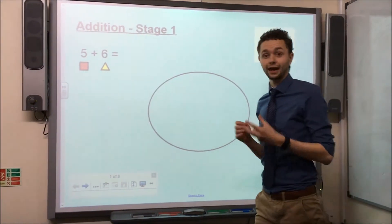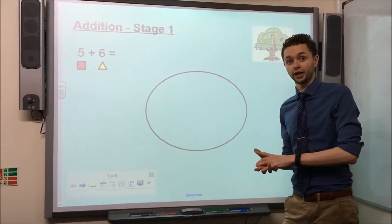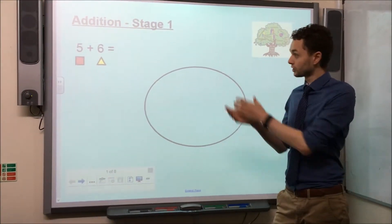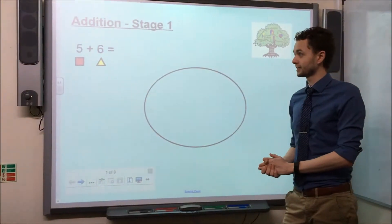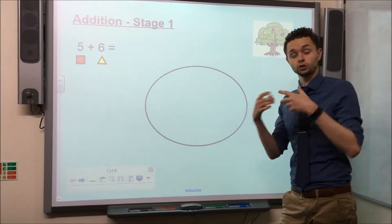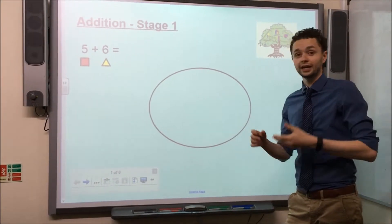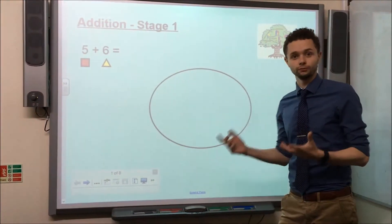This approach works by counting objects and combining objects to reach an answer. So I've got my calculation here, 5 add 6 equals. How we would tell the children to start off solving this calculation is to count out enough objects for the first number.